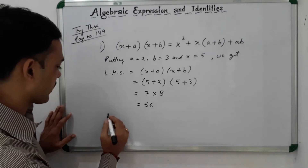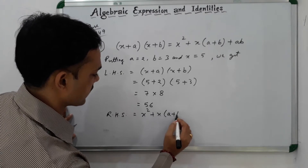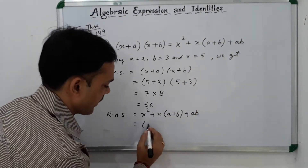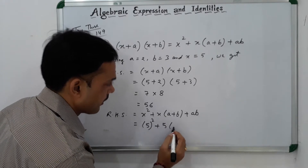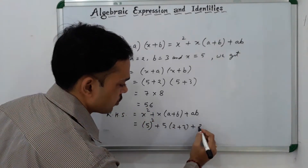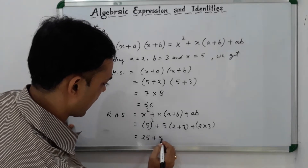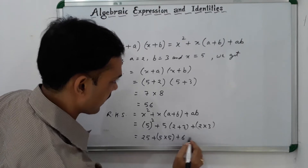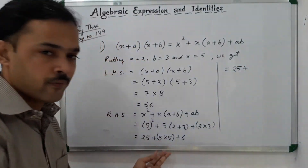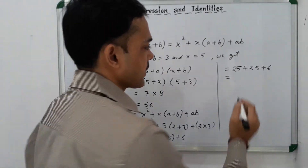Now let us take RHS. RHS is x² + x(a + b) + ab. Substituting the values: 5² + 5(2 + 3) + 2 × 3. That gives 25 + 5 × 5 + 6, which is 25 + 25 + 6 = 56.